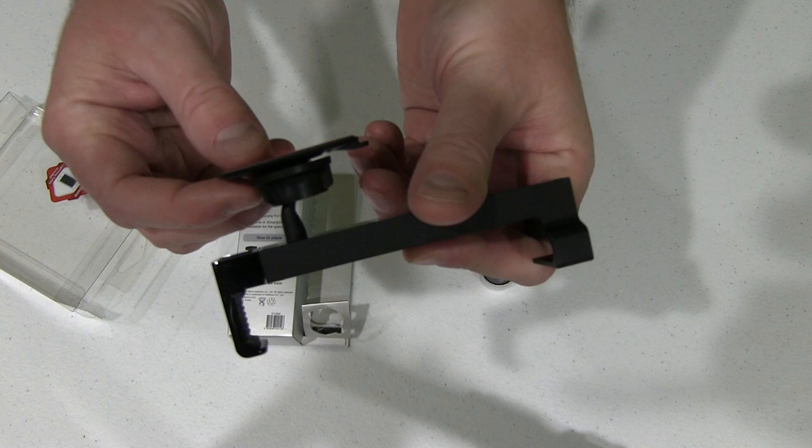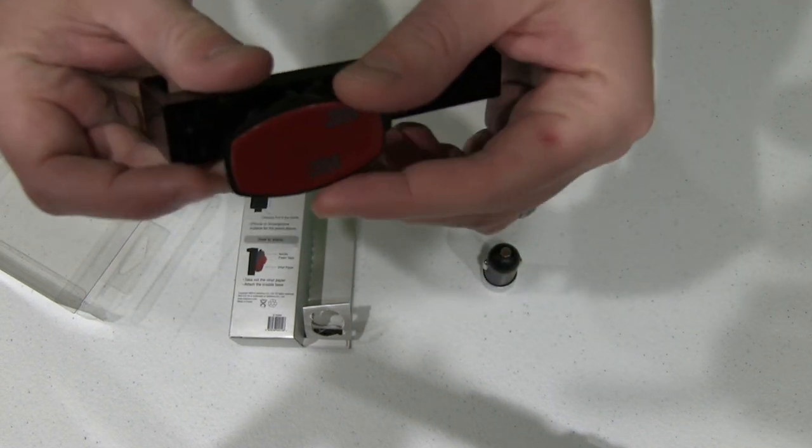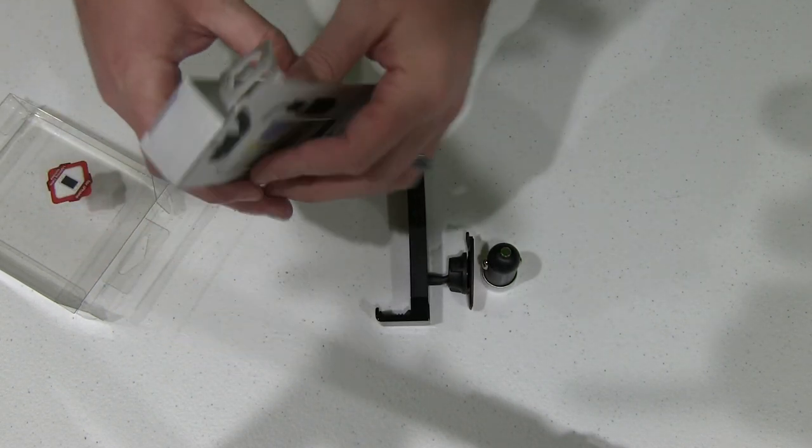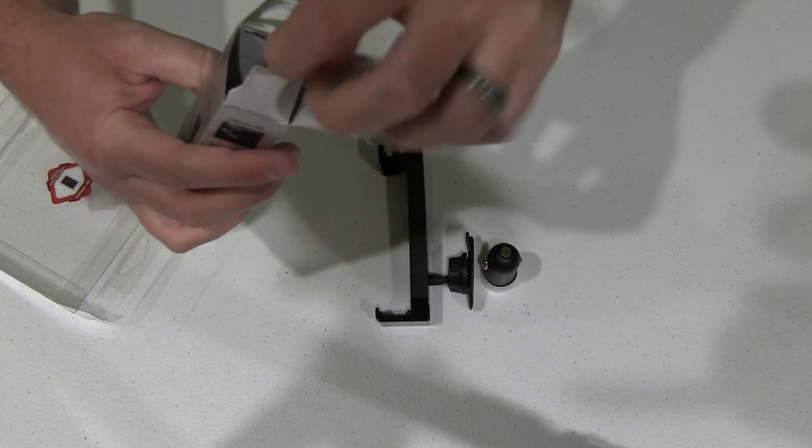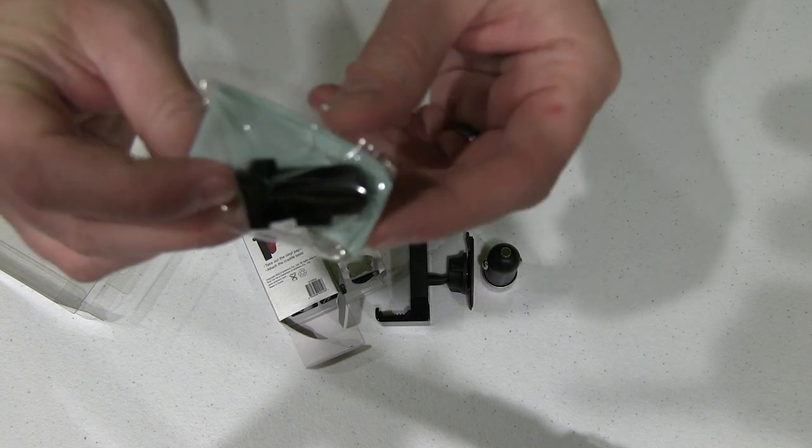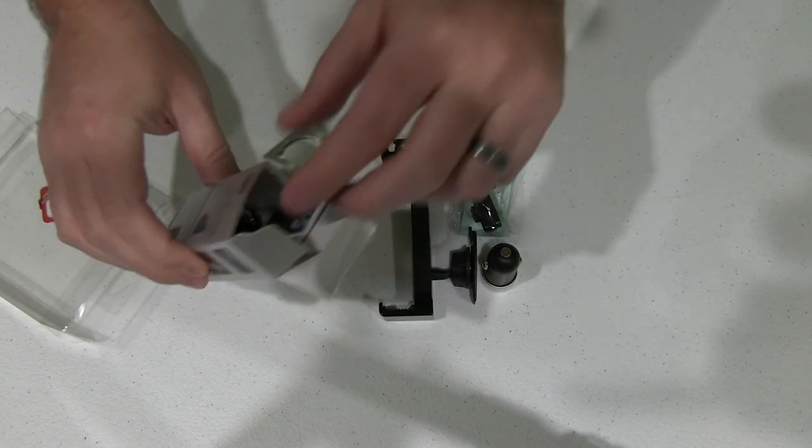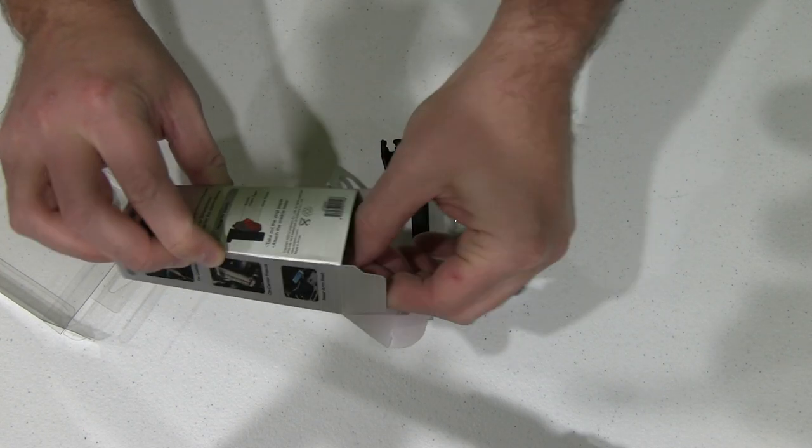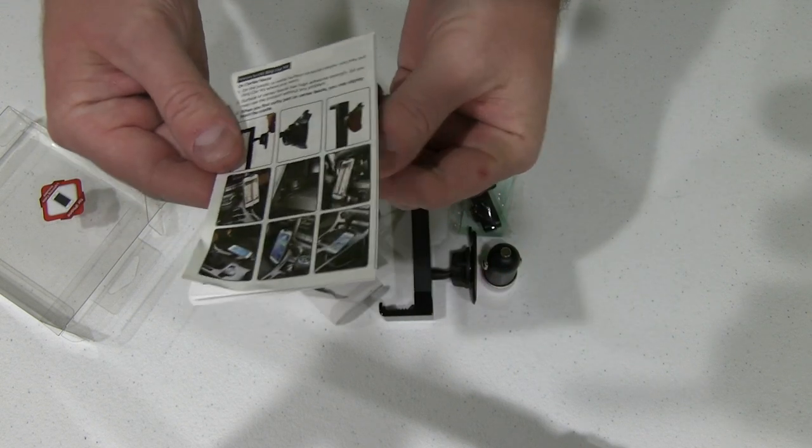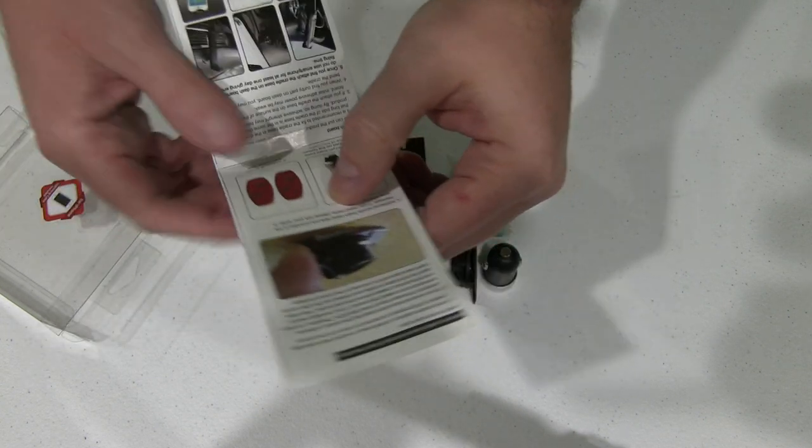And then of course this right here is the mounting bracket. You can see there's that 3M adhesive. If I took that off, I'd be able to stick this to a center console or a dashboard or whatever. We've got another mounting bracket right there. And it comes with an instruction manual, which is kind of neat.